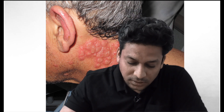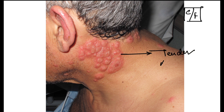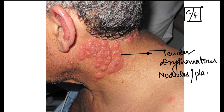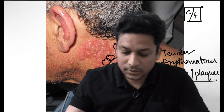Sometimes this question is asked regarding Sweet syndrome and how to approach it. Remember that these patients present with — if we talk about the clinical features and the cutaneous manifestations — they generally present with tender erythematous nodules or plaques. As you can see here, these are tender erythematous, that is red in color, and they are solid raised lesions, so they are nodules or plaques.